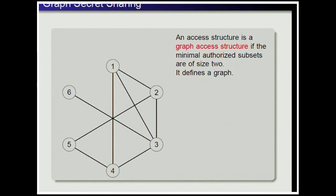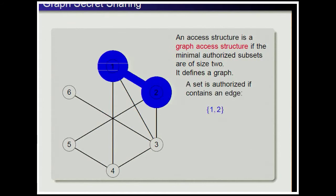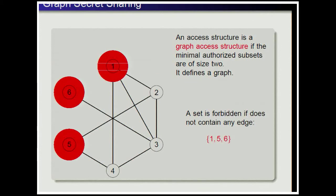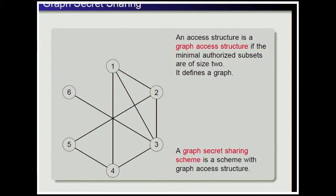An access structure is a graph access structure if the minimal authorized subsets are of size 2. In this case, the access structure defines a graph in which participants are vertices and edges are the minimal authorized subsets. A set is authorized if it contains an edge — for instance, the set {1, 2} — and a set is forbidden if it contains no edge — for instance, the set {1, 5, 6}. A graph secret sharing scheme is a scheme with graph access structure.